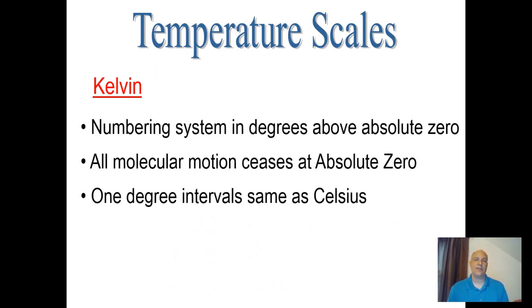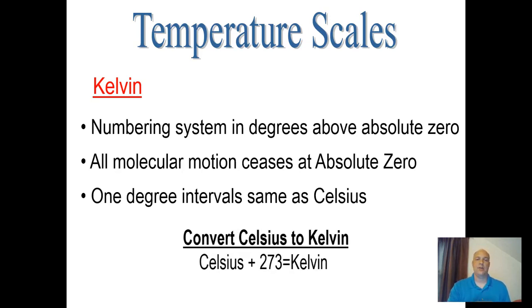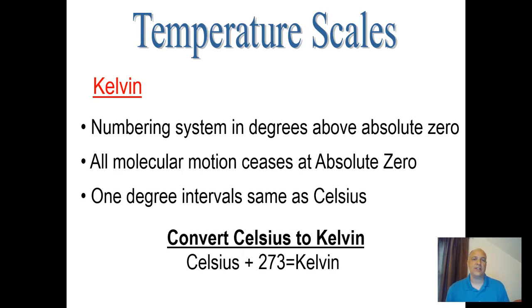A more precise scale developed by Lord Kelvin is called the Kelvin scale, used for precise scientific measurements. It's numbered in degrees above absolute zero — the temperature at which all molecular motion ceases and no heat is created. One degree intervals are the same as Celsius. To convert Celsius to Kelvin, simply add 273 to the Celsius temperature. Of all the scales, Kelvin values are always the largest.